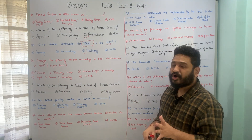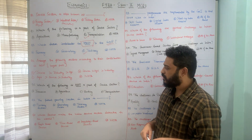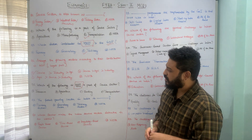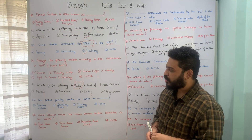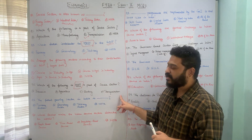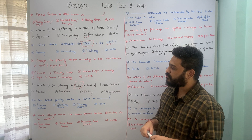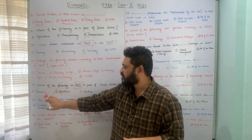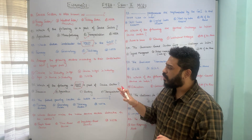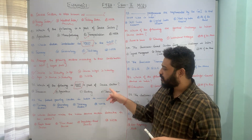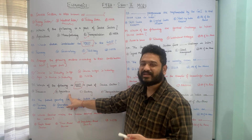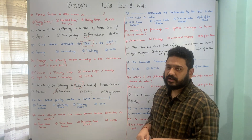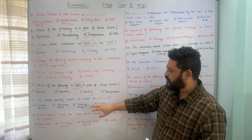Which of the following is NOT a part of service sector? Option A is insurance, B is agriculture, C is banking, D is transportation. Agriculture is not a part of the service sector — it belongs to the primary sector. Insurance, banking, and transportation are all incorporated into the service sector or tertiary sector. Therefore, the correct answer is option B, agriculture.